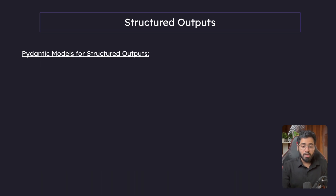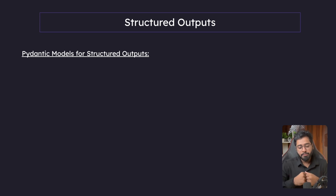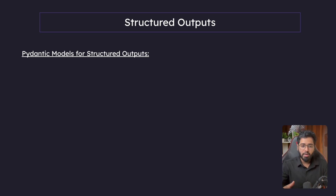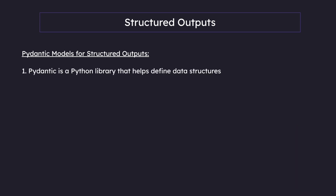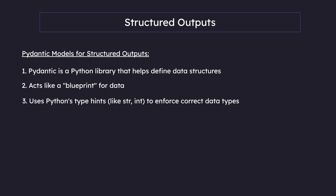There are a couple of ways in which we can force the LLM to give structured outputs. The first one is going to be using Pydantic models. If you're somebody who's new to Python, I'll quickly go through what Pydantic models are and how they can be used in the context of LangChain and LangGraph. Pydantic is a Python library that helps define data structures — it acts like a blueprint for data and uses Python's type hints like string and integer to enforce correct data types.